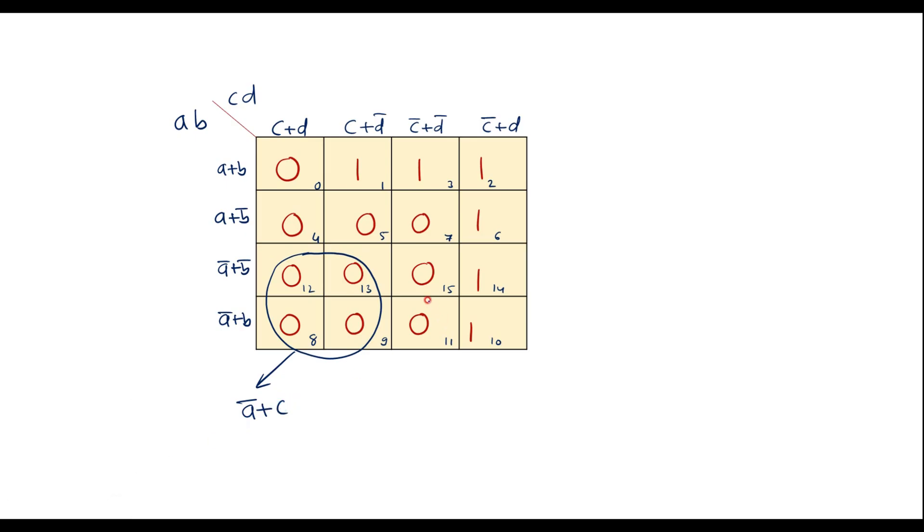So now with the help of this 0, 0 and this 0, 0 can make a quad again. I can make a quad. So here its value is, it covers again these two columns. Common variable is a bar. Here it covers these two columns. Common variable is d bar. It is a bar plus d bar.